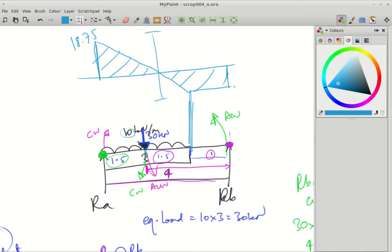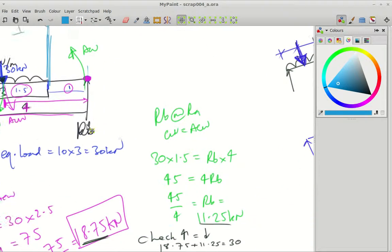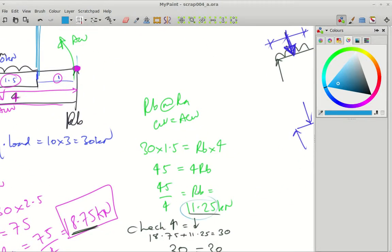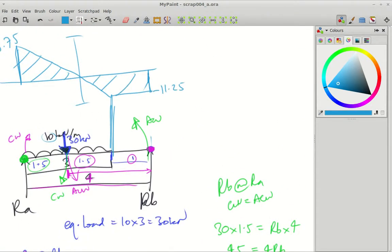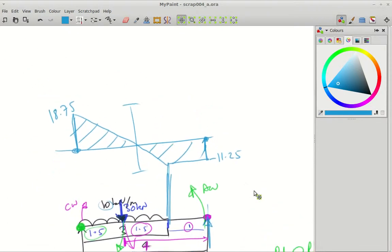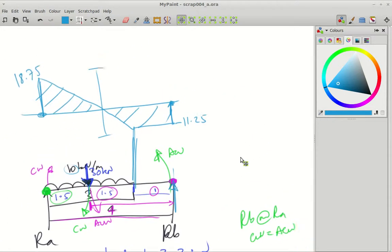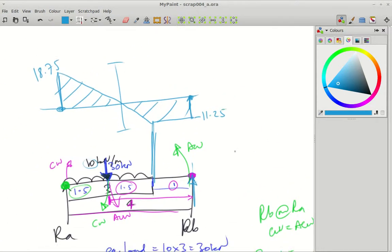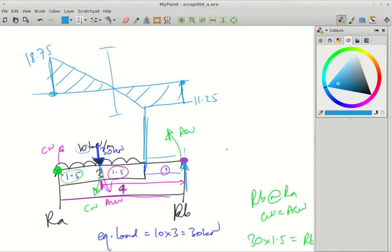And of course Rb when worked out was 11.25. So we come back up 11.25 for this up arrow and that closes it. Starts and ends on zero, perfect. So yeah, with a UDL you just have a sloping line, and then if there's no UDL you just go horizontal until you hit your next arrow. So that's it for a UDL.